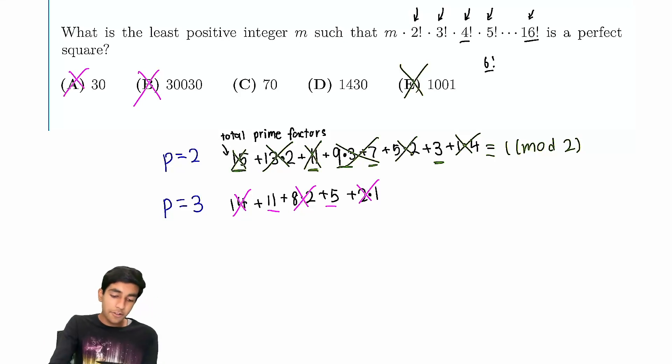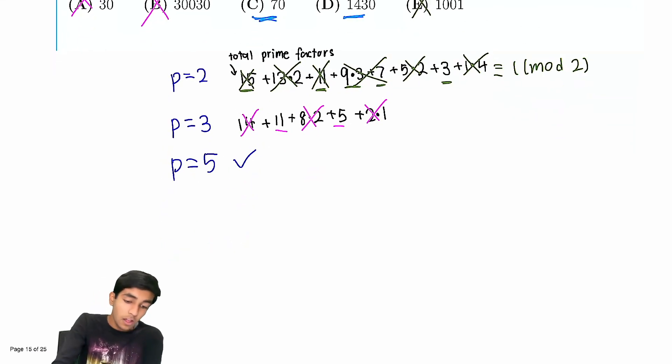Aha, so now we're down to two choices. So, if you're smart, you'll realize, okay, both of these have multiples of 5 in them. So, we can just assume p equals 5 automatically works. I mean, if you really want to do it, you can check by the same logic we did. But based on these choices, they both have factors of 5 in them. So, we know it has to work. Now, the question is, will 7 work? Because if 7 is odd, then our answer is going to be C. And otherwise, it has to be D.